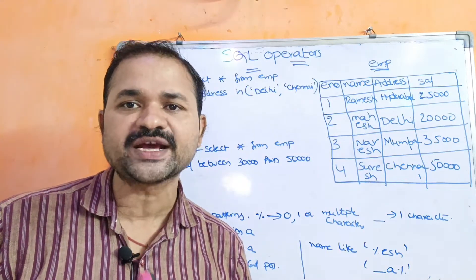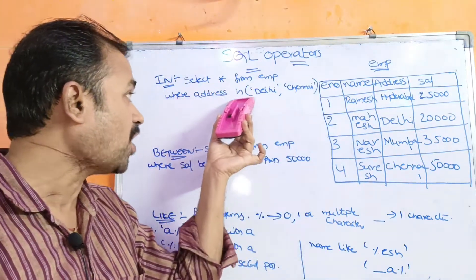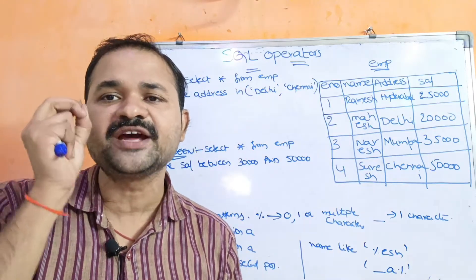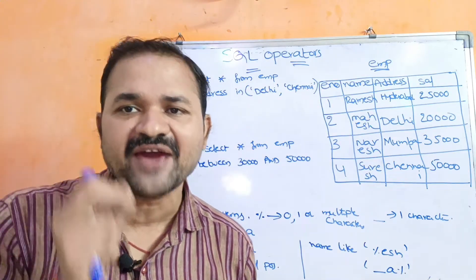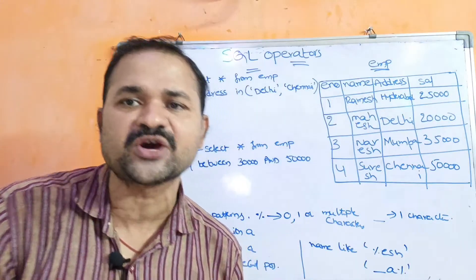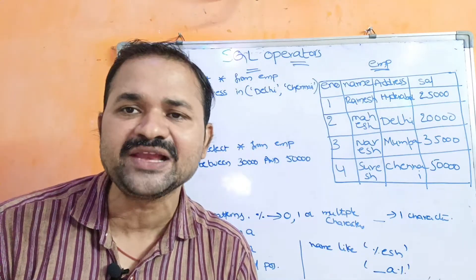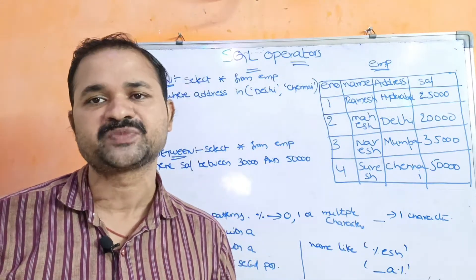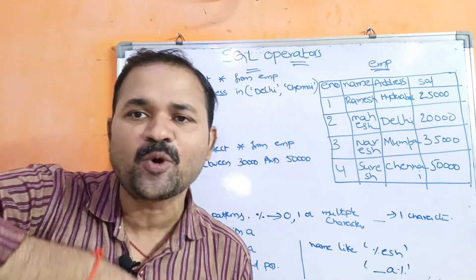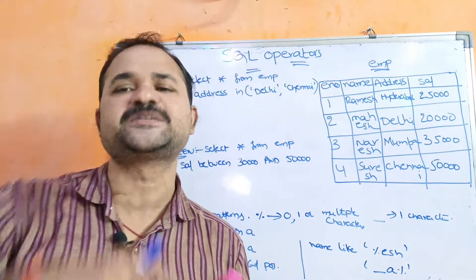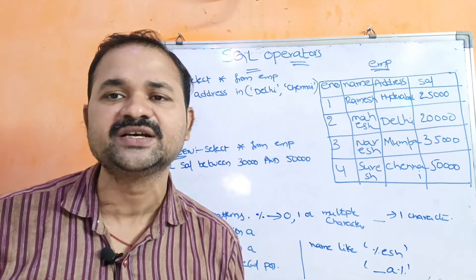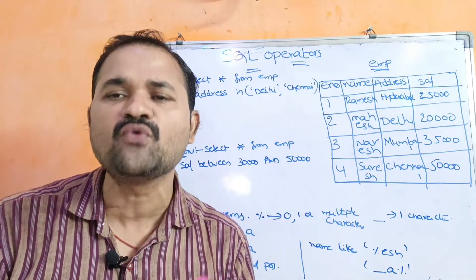First let us see about the IN operator. The IN operator is mainly useful in order to check whether a value is in a list of values or not, a collection of values or not. If the value is in that list, then the corresponding row will be displayed. If the value is not in the list, then that row won't be displayed.